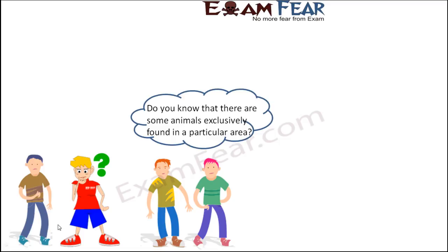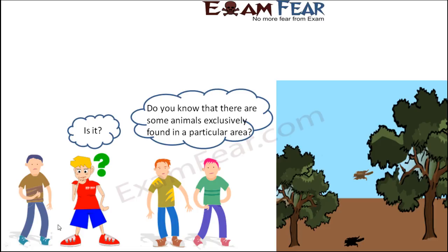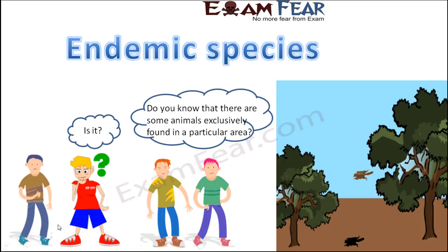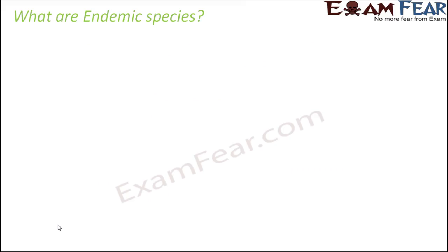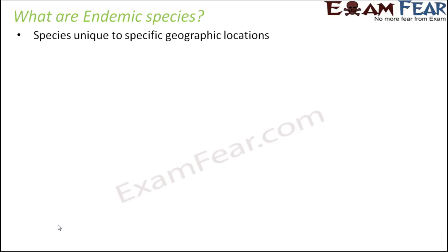Do you know that there are some animals which are exclusively found in a particular area? You do not get to see them in multiple areas — it's only in specific areas they live. This type of animal is called endemic species. So, what are endemic species? These are species which are unique to specific geographic locations.